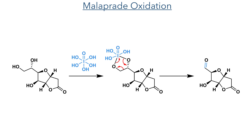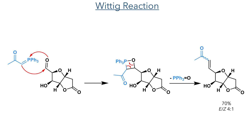This compound was then taken forward to a Malaprade oxidation. The reaction with periodic acid forms a cyclic five-membered adduct that then undergoes oxidative cleavage to form an aldehyde. This aldehyde then took part in a Wittig reaction. The concerted addition of the phosphorus ylid to the aldehyde produces a four-membered oxyphosphetane intermediate that then undergoes a cyclo-reversion to eliminate triphenylphosphine oxide and produce the target enone with a 70% yield with an E to Z ratio of 4 to 1.